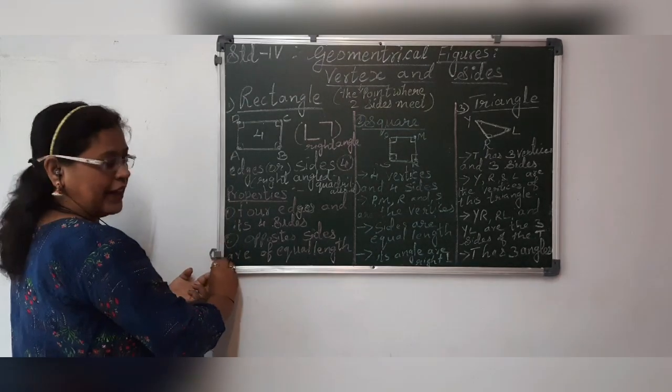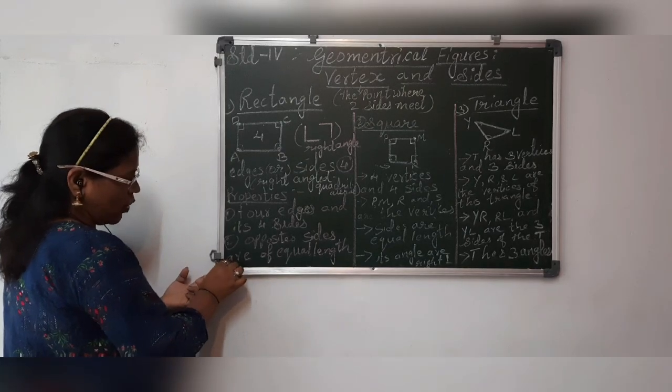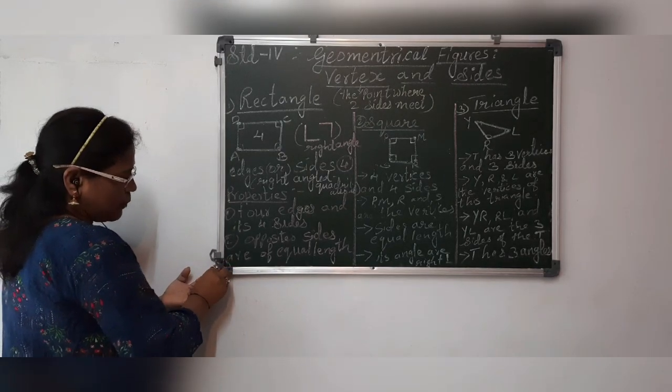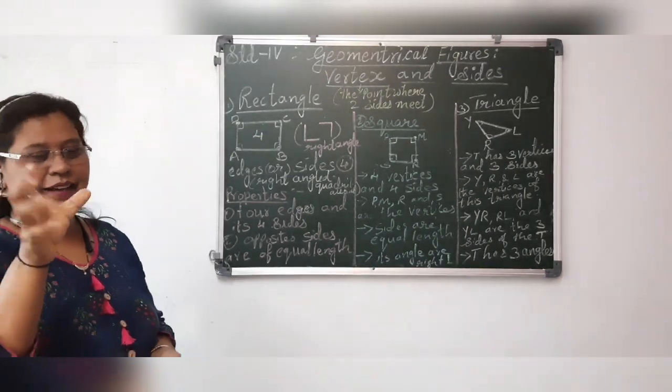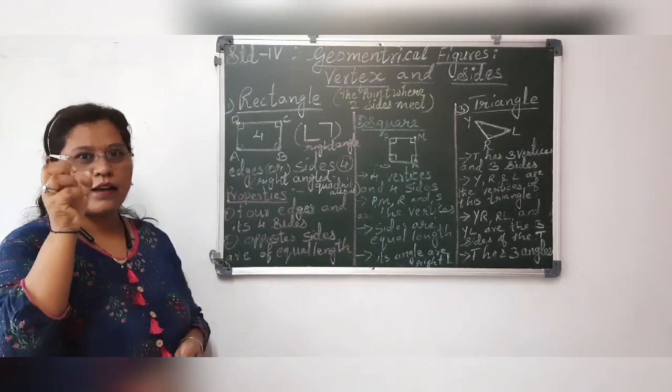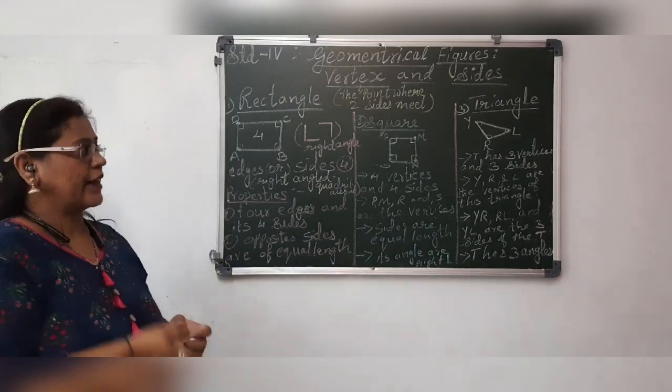For example, this is one side, this is one side where these two points join together. Here, this point is a vertex. In simple terms, it is like a corner. Side means corner or a vertex.